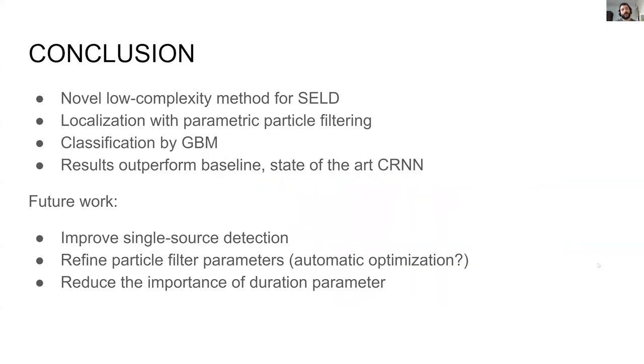In conclusion, we have presented a low-complexity method for sound event localization and detection of first-order ambisonic signals. The method localizes first sound events using a parametric particle filter approach and then classifies the estimated events with a gradient boosting machine. The results outperform a baseline state-of-the-art convolutional recurrent neural network. For future work, there are a number of topics that could be investigated: improving single source detection, refining the particle filter parameters, maybe using some sort of automatic optimization, or reducing the dependency on duration, to name a few.